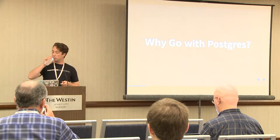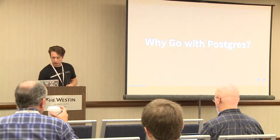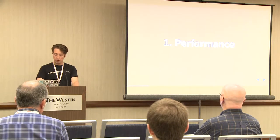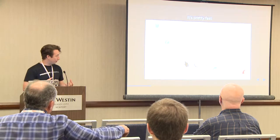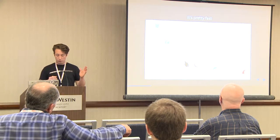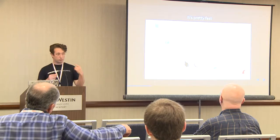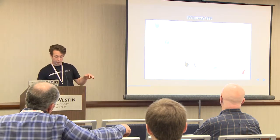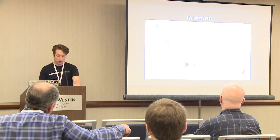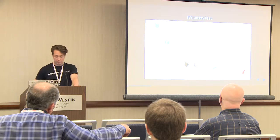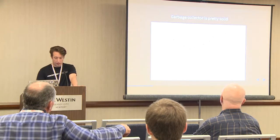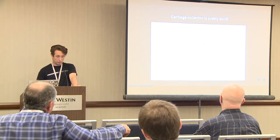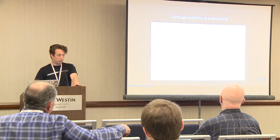Why Go with Postgres? I think there are three main reasons. First: performance. Go is pretty fast. The y-axis here is requests per second to a JSON API over HTTP, and Go is at 21,000 requests per second, with Node next at 14,000, and Vapor (Swift on the back end) third. The garbage collector is solid and fast, with extensive work over the last three or four releases on a six-month release cycle.